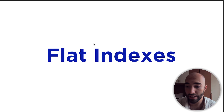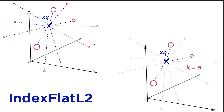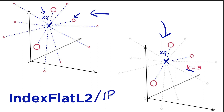Let's move on to flat indexes. What you can see is a visual representation of a flat L2 index. We have all of these XB data points and our query vector, and we just calculate the distance between all of those, then take the top K — in this case top three. We also have IP, so we have both L2 distance and IP distance. IP works in a different way, using a different formula to calculate the distance or similarity.